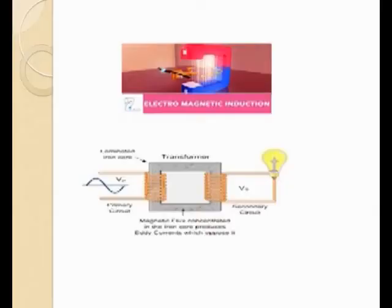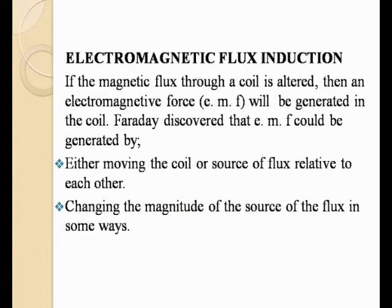Now at this junction, we need to understand what we are actually talking about. If the magnetic flux through a coil is altered, then an electromagnetic force will be generated in the coil. EMF can be generated by either moving the coil or the source of flux relative to each other, or by changing the magnitude of the source of the flux.